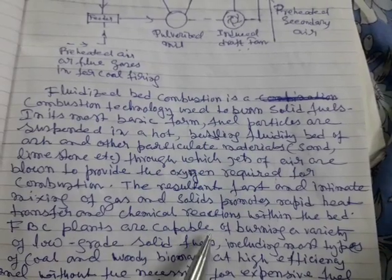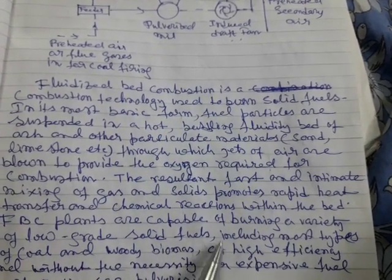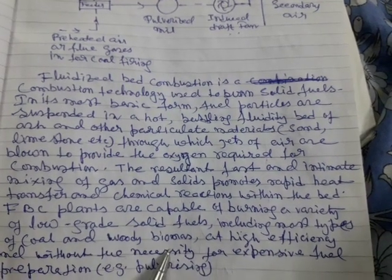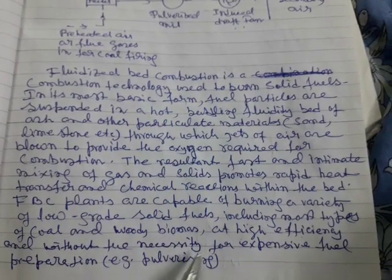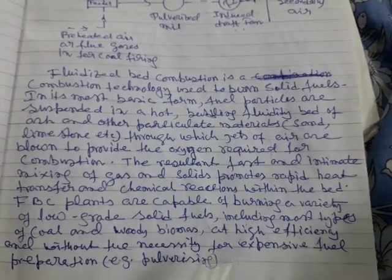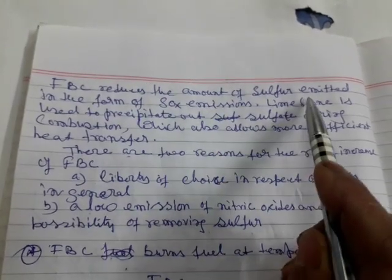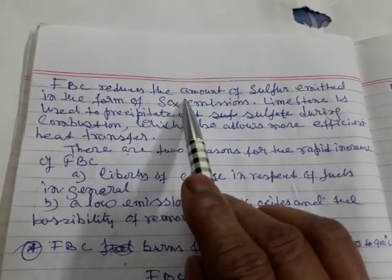FBC plants are capable of burning a variety of low-grade solid fuels, including most types of coal and woody biomass, at high efficiency and without the necessity for expensive fuel preparation like pulverizing.